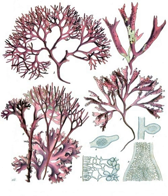Red algae store sugars as floridean starch, which is a type of starch that consists of highly branched amylopectin without amylose, as food reserves outside their plastids. Most red algae are also multicellular, macroscopic, marine, and reproduce sexually.